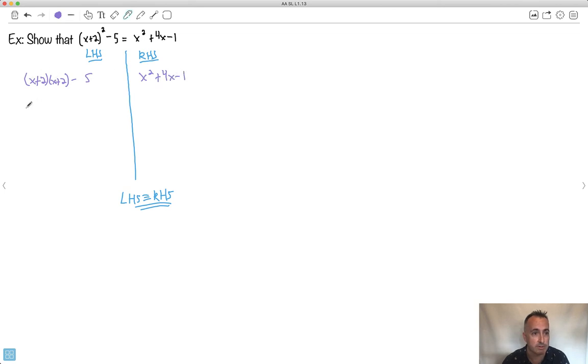Let's see what happens here. I multiply the first times the first. I get x squared. Outside, x times 2 is 2x. Inside is 2 times x, which is 2x. Last is 4, because that's 2 times 2. Don't forget the minus 5. So I'll group these together. Maybe I'll do this in a different color here. I'll group them together. So then I end up with, let's see, I end up with x squared plus 2x plus 2x, which is 4x.